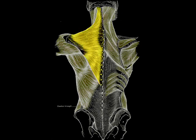The upper portion of the trapezius can be developed by elevating the shoulders. Common exercises for this movement are shoulder shrugs and upright rows.